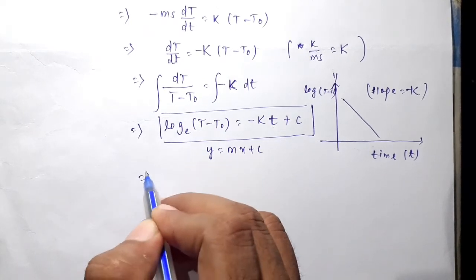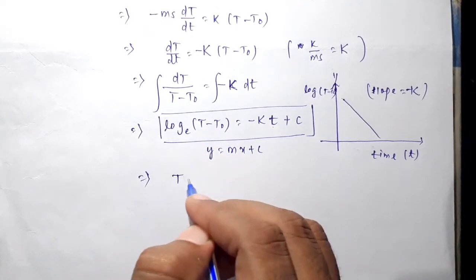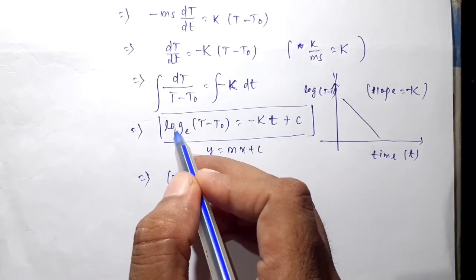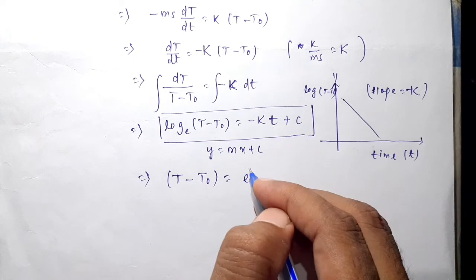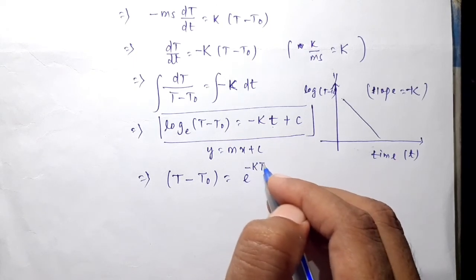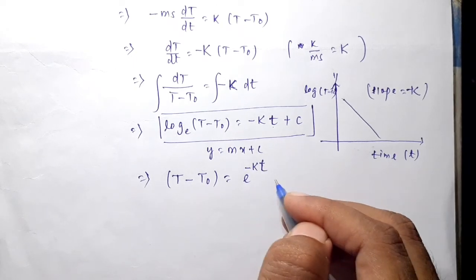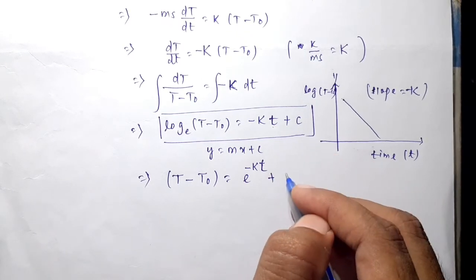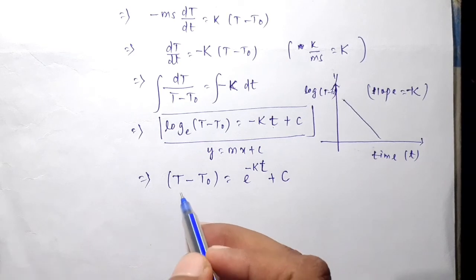From this equation we can write T minus T0. Canceling the logarithm, the right side will have exponential terms: e to the power minus K·t times e to the power C, which gives another constant. This will be exponential.